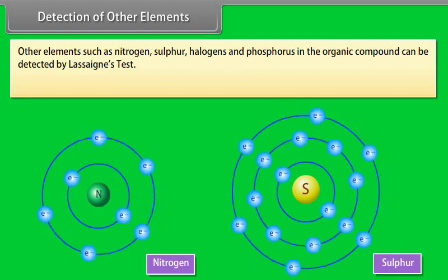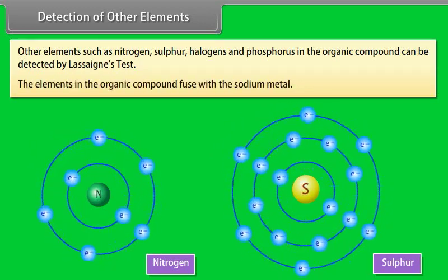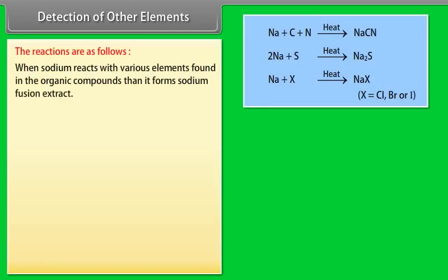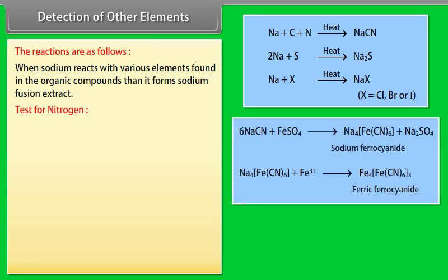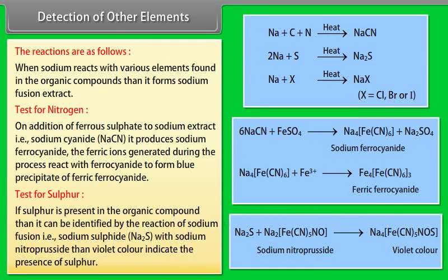Detection of other elements — Nitrogen, Sulfur, Halogens, and Phosphorus — can be detected by Lassaigne's test. The elements in the organic compound are fused with sodium metal to form the sodium fusion extract. Test for Nitrogen: Addition of ferrous sulphate to the sodium extract (sodium cyanide) produces sodium ferrocyanide; the ferric ions generated react with ferrocyanide to form a blue precipitate of ferric ferrocyanide (Prussian blue). Test for Sulphur: If sulphur is present, the reaction of sodium fusion (sodium sulphide, Na₂S) with sodium nitroprusside gives a violet colour indicating its presence.